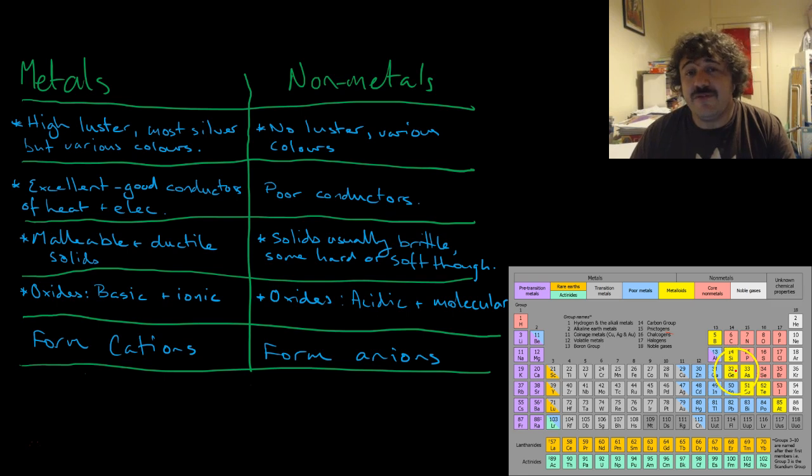Now, metals form cations, so positive ions, and non-metals form anions, or negative ions.